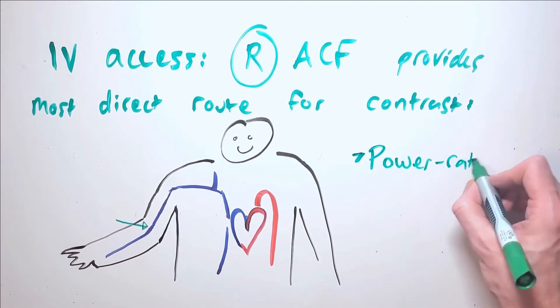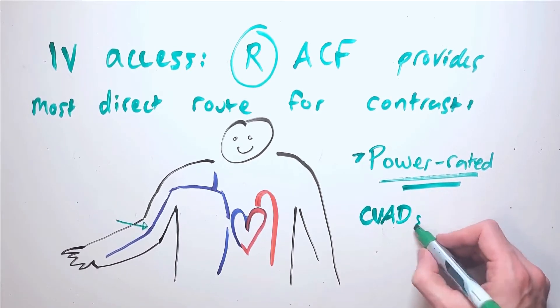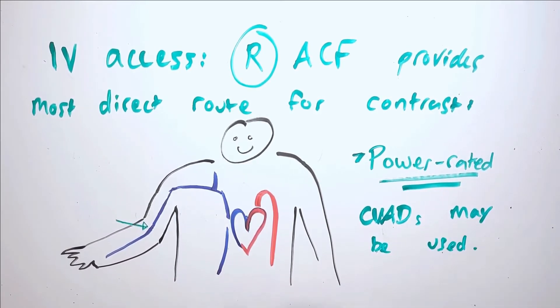Central venous access devices such as PICC lines or portacaths can also be used for IV contrast injection as long as they are approved for use with a power injector system, which we will talk about shortly.